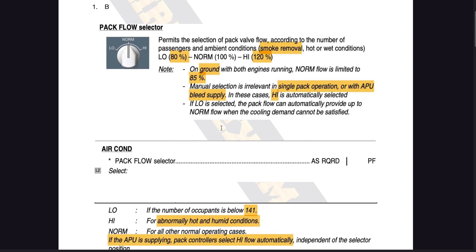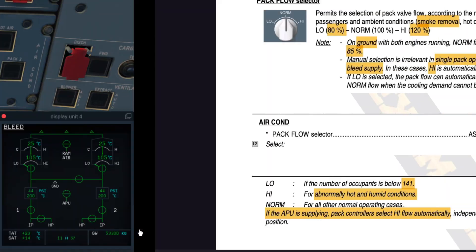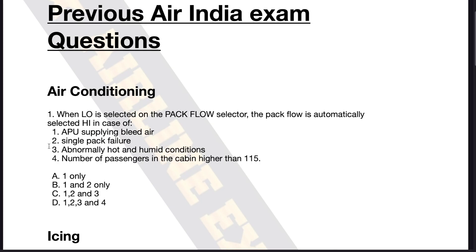If you look at the FCOM extract, this is from the FCOM systems display — manual selection is irrelevant in single pack operation or with APU bleed supply; in these cases, high is automatically selected. Moving to the FCOM normal procedures for the overhead panel, it says pack flow selector as required, selected by the pilot flying: option low if the number of occupants is below 141, option high for abnormally hot and humid conditions, and normal for all other cases. Again, it emphasizes that with APU supplying, pack controllers select high flow automatically, independent of the selector position. So the correct answer is B, one and two only.